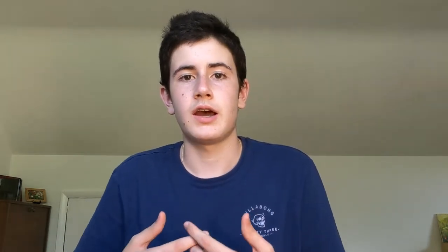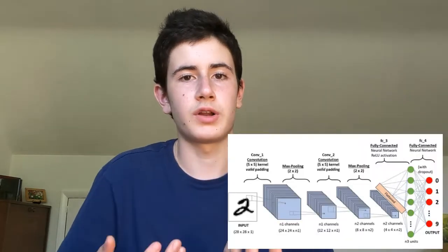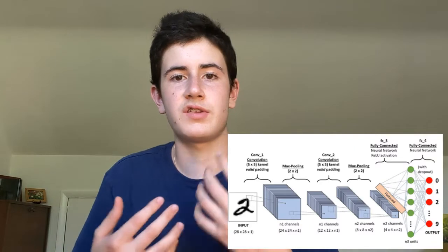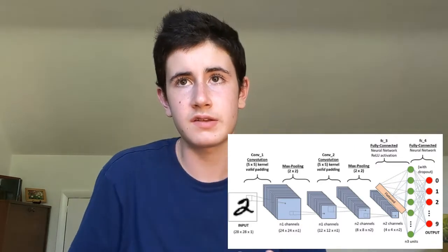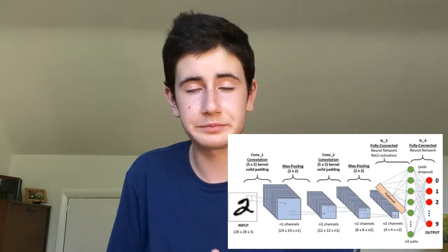What is a neural network? It's essentially a deep learning algorithm that takes an image as an input and is able to understand various aspects of the image, assign its importance, and uses weights and biases to do that.